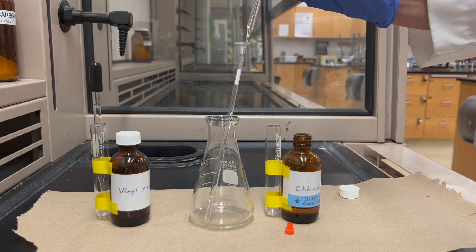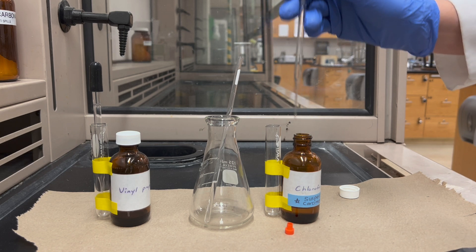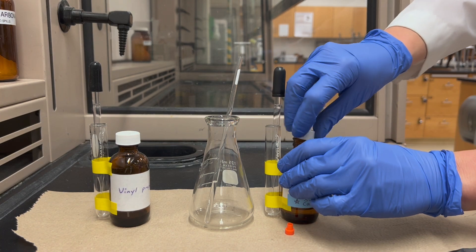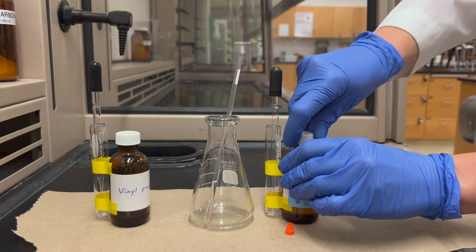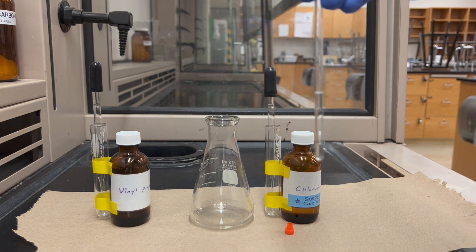Then you can add that to your NMR tube and you want to fill it up to about one and a half inches high. If you have extra you can actually put that back into the reagent jar, especially if you know that pipette is clean. Deuterochloroform is actually quite expensive so we don't want to waste it.